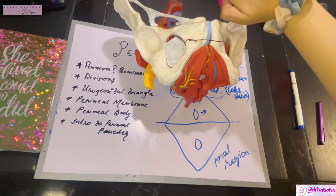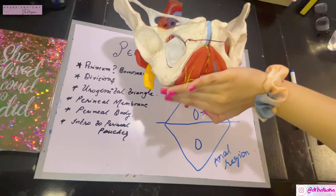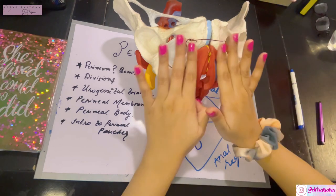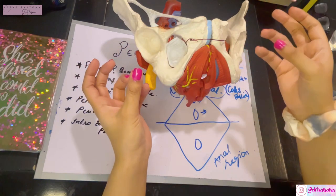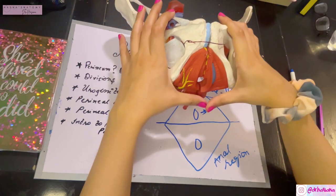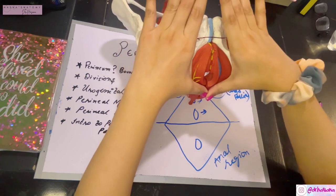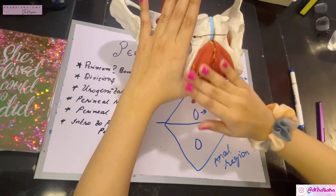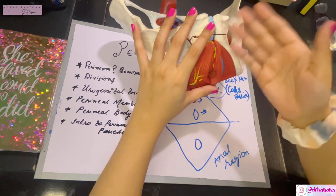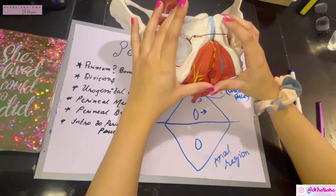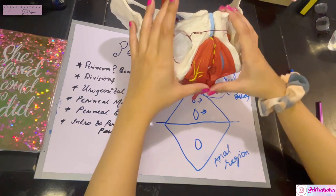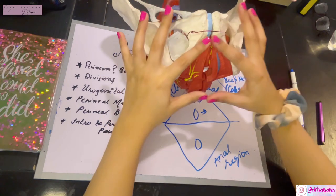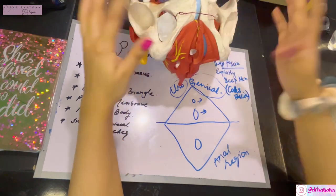Colles' fascia is continuous superiorly with Scarpa's fascia of the abdominal wall. If there is rupture of the urethra in this superficial area, superficial extravasation of urine occurs: urine leaks into the abdominal wall, the superficial perineal pouch, the scrotum, and the penis, because Colles' fascia is continuous with their fasciae. However, it is restricted from spreading into the anal region due to its attachment to the perineal membrane, and also restricted from spreading into the thigh.